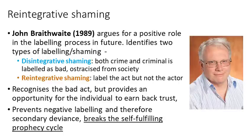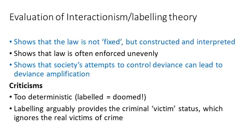On this theme, there have been discussions about how it would be best to punish people without engaging in this labelling process. This is where we come across reintegrative shaming and the work of John Braithwaite, who argues for a positive role in the labelling process and identifies two types of current labelling and shaming. Firstly, disintegrative shaming, where both the crime and the criminal are labelled as bad and the criminal is ostracised or excommunicated from society. He believes this should be replaced with reintegrative shaming, where we label the act but not the actor. As a result, we recognise the bad act but provide an opportunity for the individual to earn back trust and show they are truly sorry. It prevents negative labelling and therefore secondary deviance, breaking the self-fulfilling prophecy cycle and the deviancy amplification cycle as well.